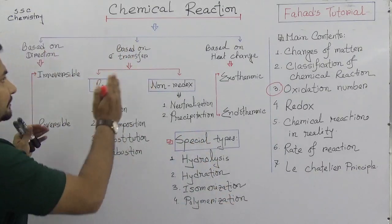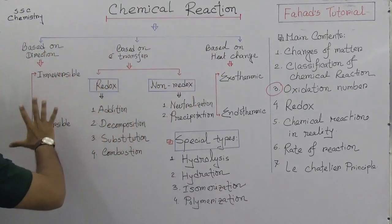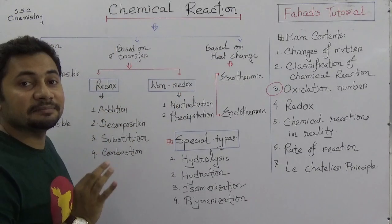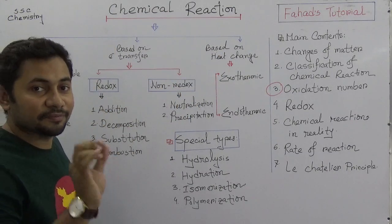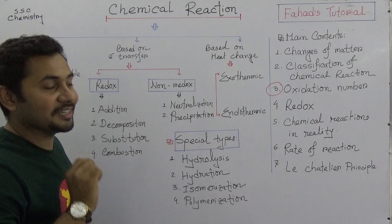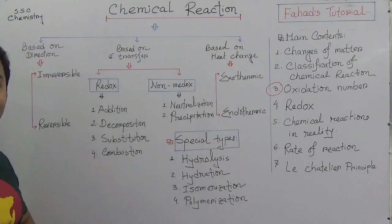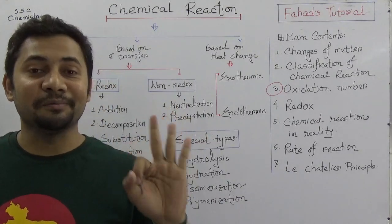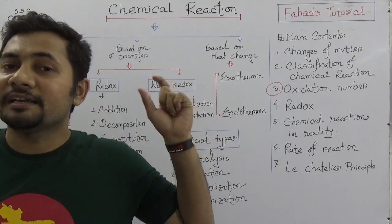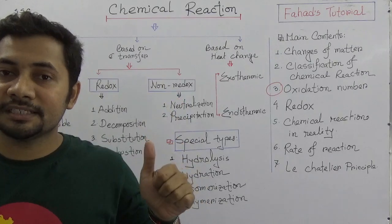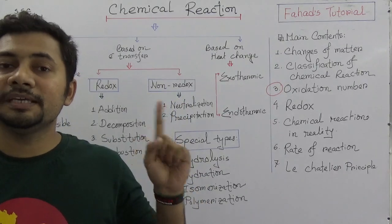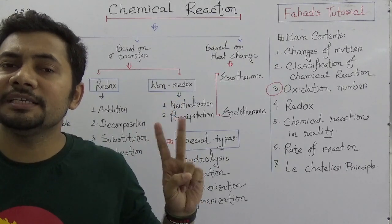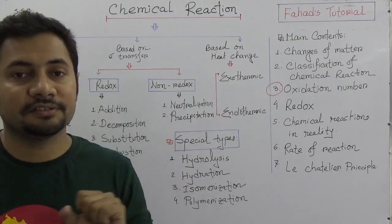I have written the types of chemical reactions. Primarily we can divide them into three ways: based on directions, based on heat change, and based on electron transfer.